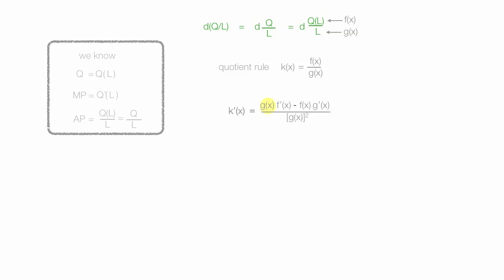So g of x is just equal to L. The first derivative of f of x is simply q prime of L, which is marginal product. Minus q of L, which is f of x. And the first derivative of g of x is simply 1, because I'm taking it with respect to L. And I squared g of x, which is L squared. So it becomes: L times marginal product, minus quantity as a function of labor times 1, all divided by L squared.